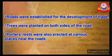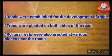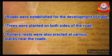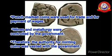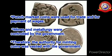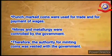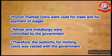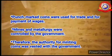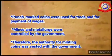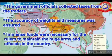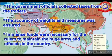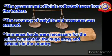Roads were established for the development of trade, and trees were planted on both sides of the road. Potter's rests were also erected at various places near the roads. Punch-marked coins were used for trade and payment of wages. Mines and metallurgy were controlled by the government, and the authority for minting coins was vested in the government.